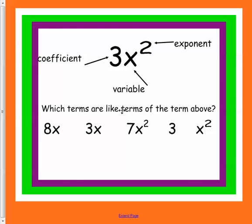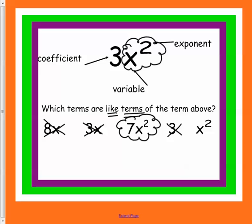So which terms are like terms of this one? Keep in mind, we must have the x squared. This one doesn't have an x squared, it only has an x. Same with this one. This one has an x squared, this one doesn't have an x or an x squared, and this one has an x squared.